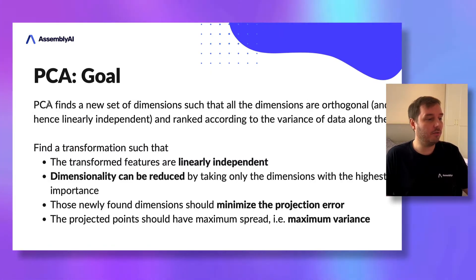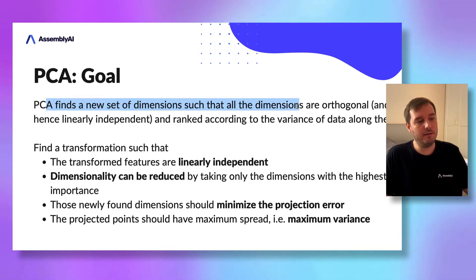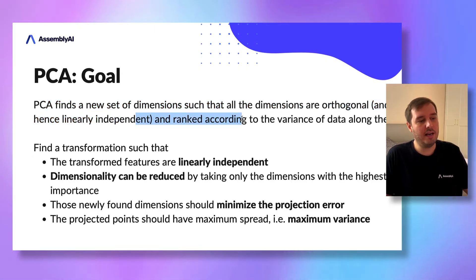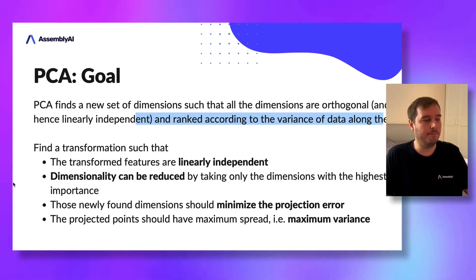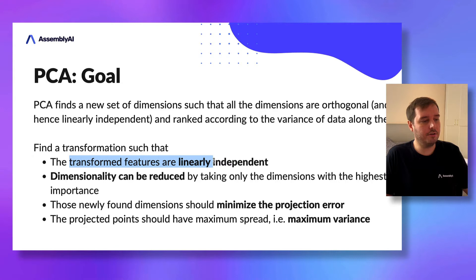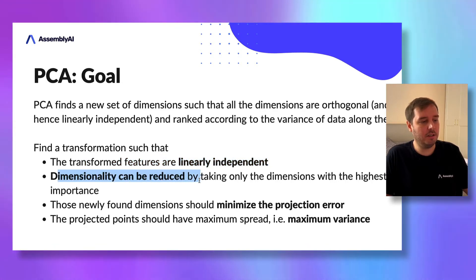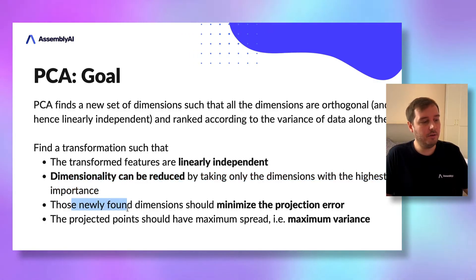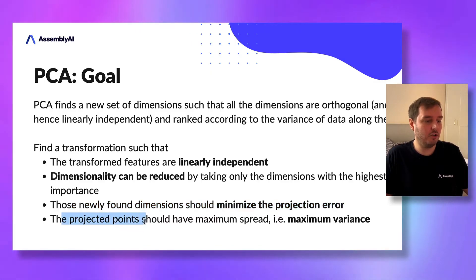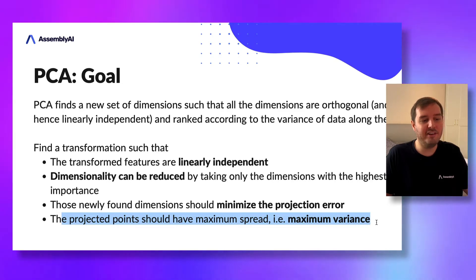In other words, we try to find a new set of dimensions such that all dimensions are orthogonal and hence linearly independent, ranked according to the variance of data along them. The transformed features should be linearly independent, the dimensionality can be reduced by taking only the dimensions with highest importance, the newly found dimensions should minimize the projection error, and the projected points should have maximum spread, which means maximum variance.